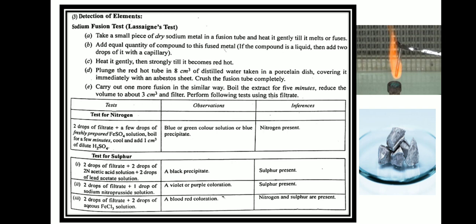Using the filtrate, perform tests for nitrogen, sulfur, and halogens. For nitrogen: take 2 drops of filtrate, add freshly prepared ferrous sulfate solution, boil for a few minutes, cool, and add 1 ml dilute acetic acid. A blue-green colored solution or blue precipitate means nitrogen is present. For sulfur: take 2 drops of filtrate plus 2 drops of 2N acetic acid plus 2 drops of lead acetate solution — a black precipitate means sulfur is present. Another sulfur test: 2 drops of filtrate plus 1 drop of sodium nitroprusside — a violet or purple coloration means sulfur is present. Additionally, 2 drops of filtrate plus 2 drops of aqueous FeCl3: a black-red coloration indicates nitrogen or sulfur.